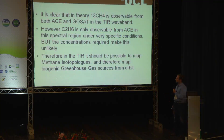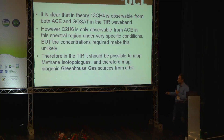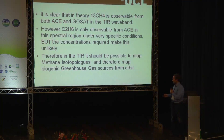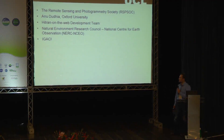In conclusion, it is clear that we can see isotopologue lines in the thermal region for both GOSAT and ACE. Unfortunately, we won't be able to make a global map in the thermal region from GOSAT, but we should be able to get a good vertical profile. For ethane, it's frankly not really workable in any sense. Thanks to the RSP SOC, IGAC, and other developers of various tools used in this assessment. Thank you.